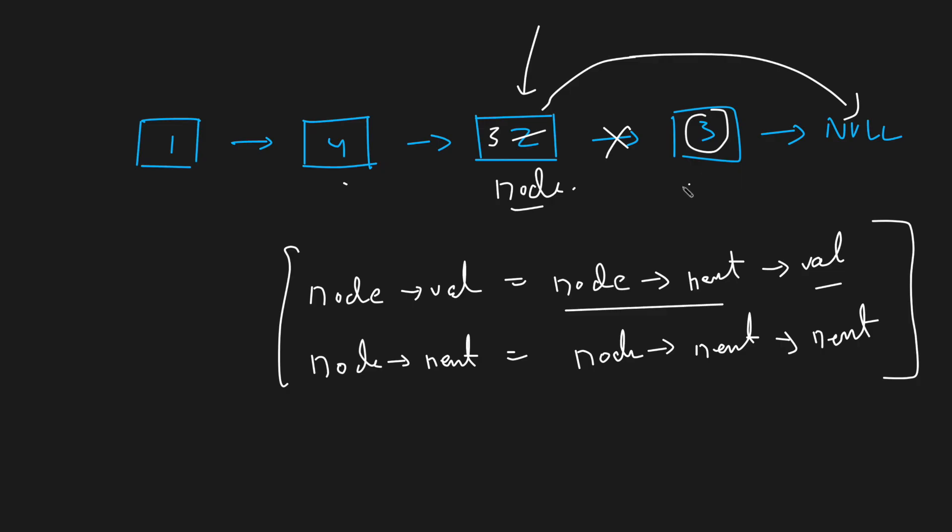Also, if it was said that node can be the tail node, in that case you can have an if-else check. You basically check if this is the last node. If this is the last node, what you do is you simply assign node to be null.